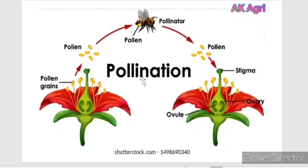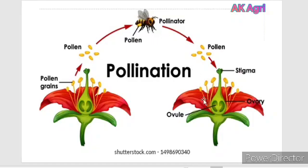The first step is pollination. Pollination is nothing but the transfer of pollen grains from anthers to the stigma of the same flower or to a different flower.